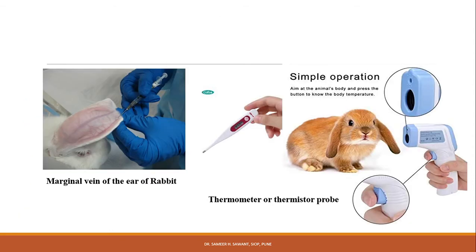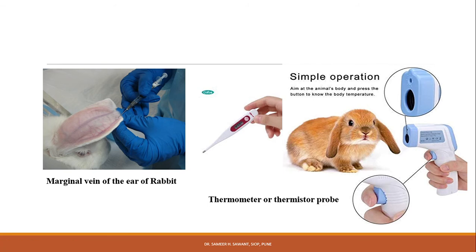This is the marginal vein of the ear of the rabbit, and this is the thermometer by which we can record the rectal temperature of the rabbit. Nowadays, an advanced digital thermometer can be used to record the temperature of the rabbit.